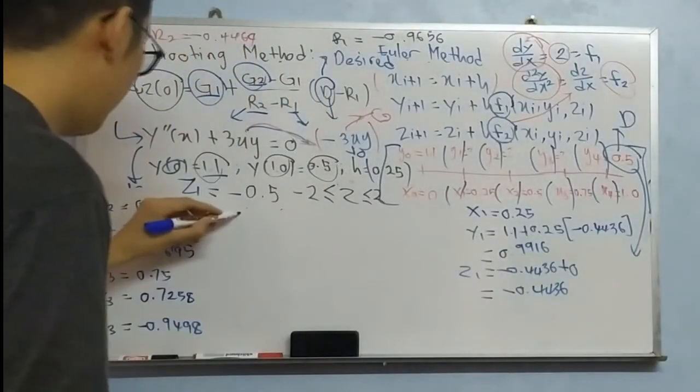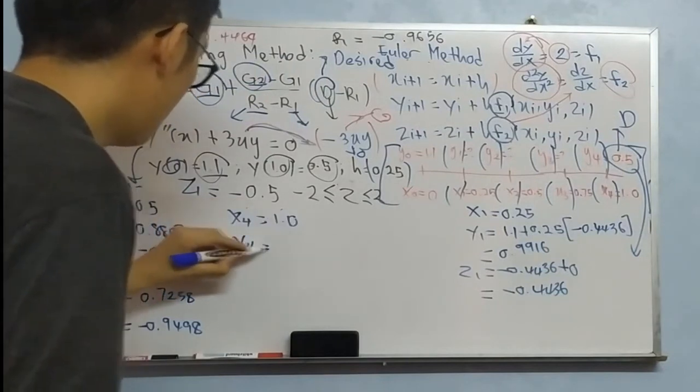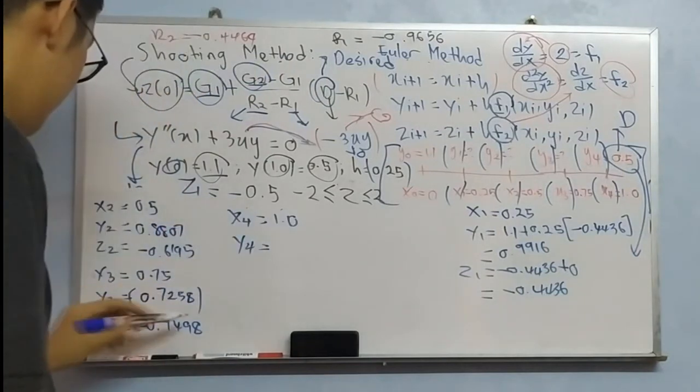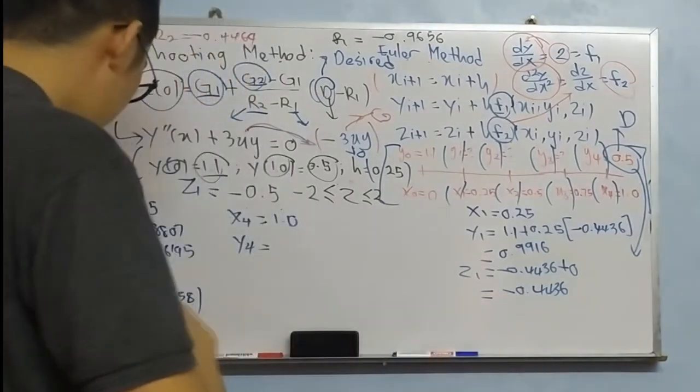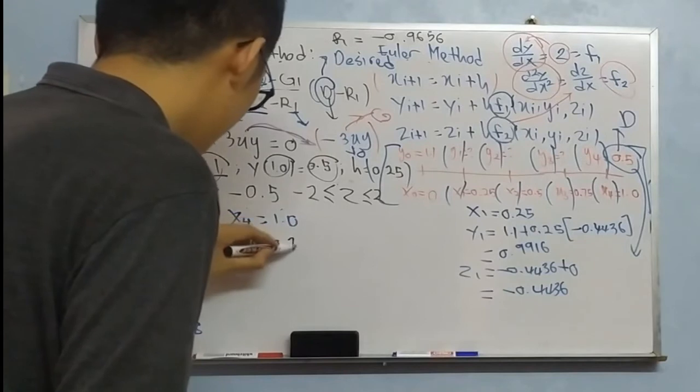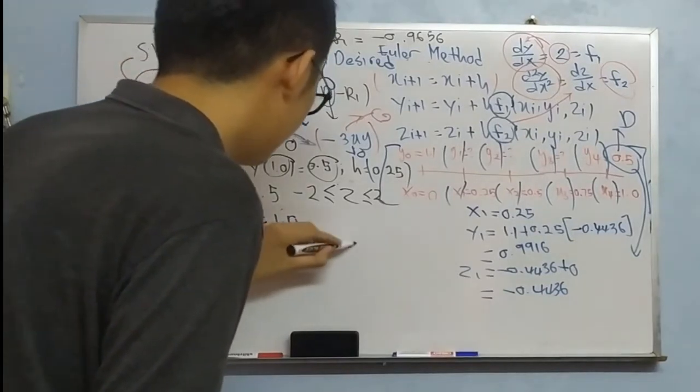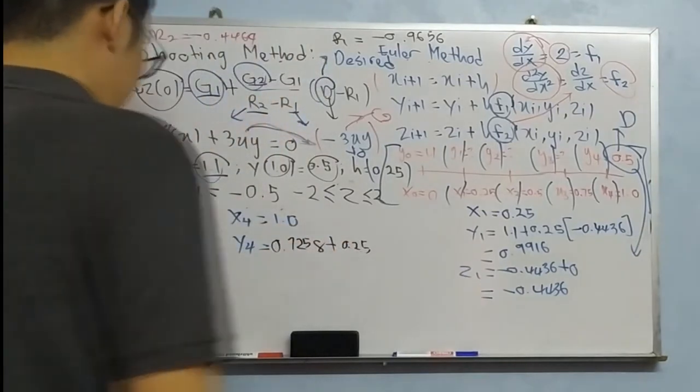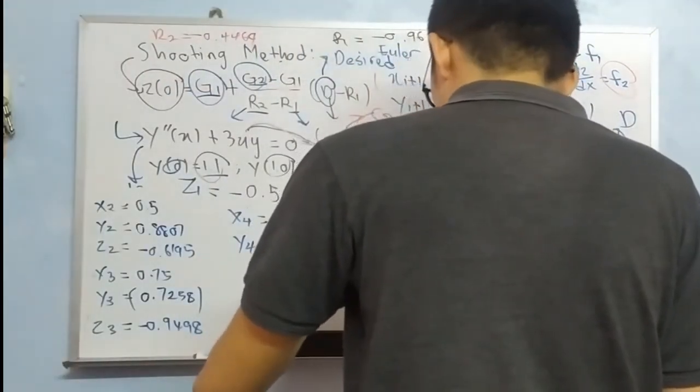So now, X4: 1.0, Y4: 0.7258. 0.7258 plus with H and function of 1, and if 0.9498.